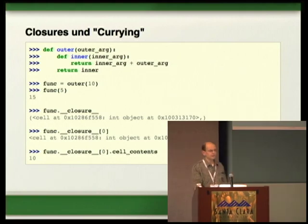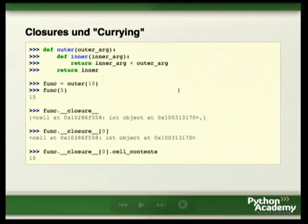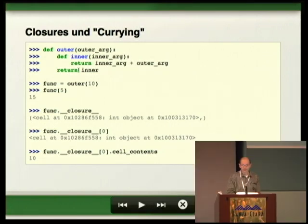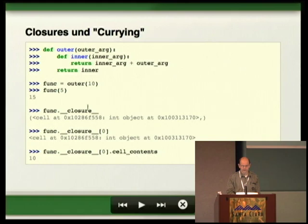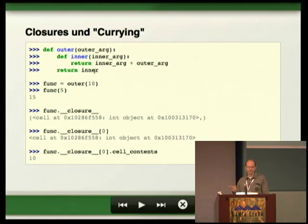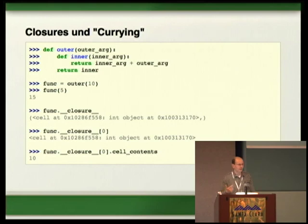If you have closures, nested functions can act like this: an inner function has access to the outer argument. You can return functions — sometimes called a function factory. So you get a new function where, for example, 10 is bound to the outer argument. If you call the inner function with 5, you get 5 plus 10 equals 15. This is what's called a closure, and you can inspect it. The outer function stores state, which is something you commonly do in functional programming.